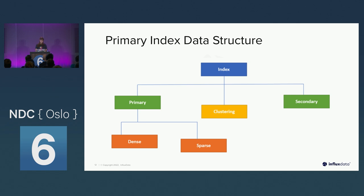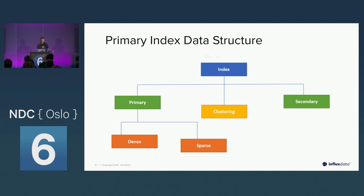Most databases always have a primary index — that's normally what you are querying on. In SQL the primary key is normally the ID on the table, like customer one, customer two, or an order with an ID. When it comes to a time series database, the primary key is the timestamp because you normally query based on time. That makes it faster for querying time series data, since that's the main thing being indexed. You can also occasionally have secondary indexes as well.